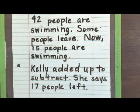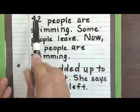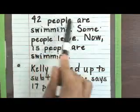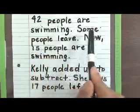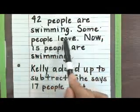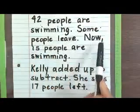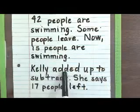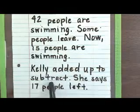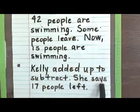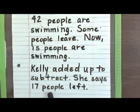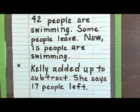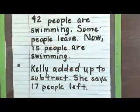Let's go ahead and read it the first time. It says: 42 people are swimming. Some people leave. Now 15 people are swimming. Kelly added up to subtract. She says 17 people left. So now we've read it the first time to understand what the problem is about.